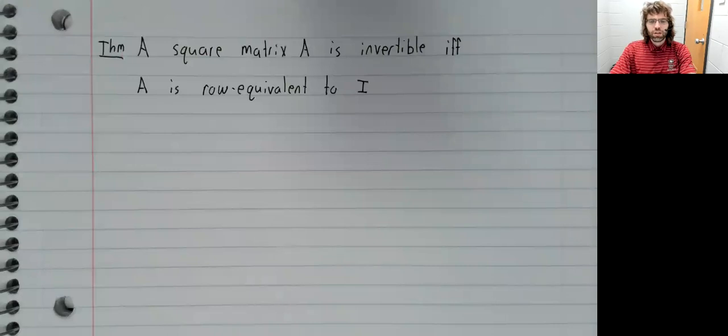We'll start with a theorem that we have already stated and proven. A square matrix A is invertible if and only if Gauss-Jordan elimination turns it into the identity matrix.